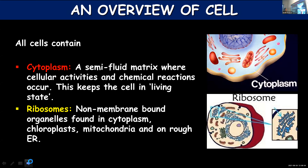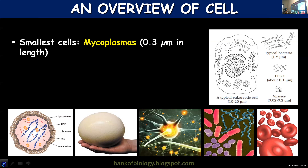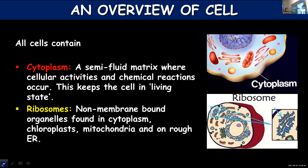It is the presence of ribosomes that differentiates smooth endoplasmic reticulum from rough endoplasmic reticulum. In smooth ER, no ribosomes are present, whereas in rough ER, ribosomes are attached to it, giving it a rough appearance.